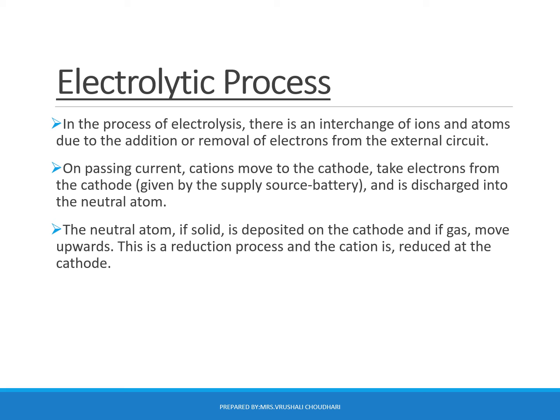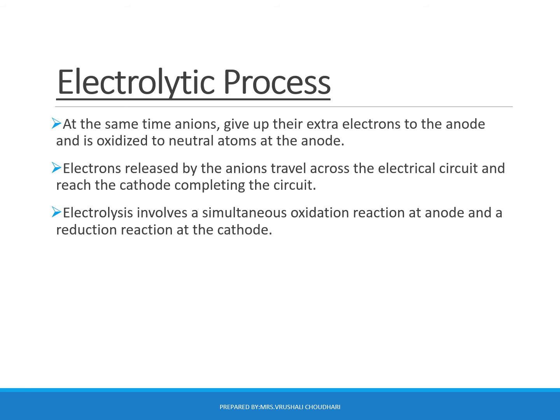In the electrolytic process, there is an exchange of ions and atoms due to the addition or removal of electrons from the external circuit. On passing current, cations move towards the cathode — cations are positively charged, so they move towards the negatively charged cathode — while anions move towards the positively charged anode. Electrons released by the anode travel across the electrical circuit and reach the cathode, completing the circuit. Electrolysis involves a simultaneous oxidation reaction at the anode and reduction reaction at the cathode.